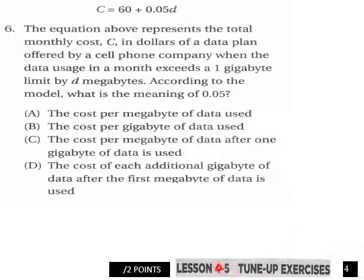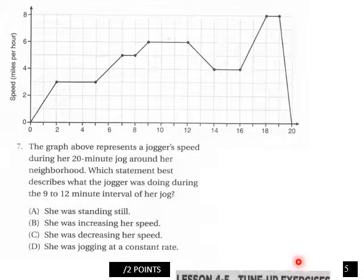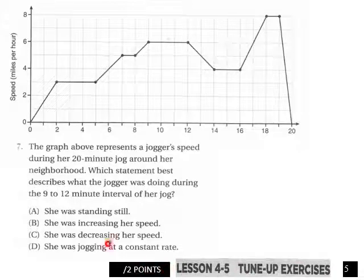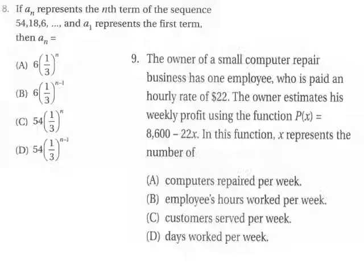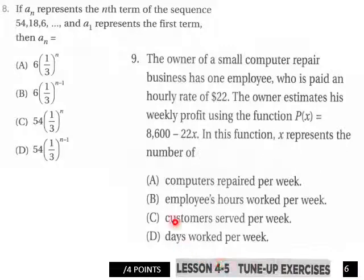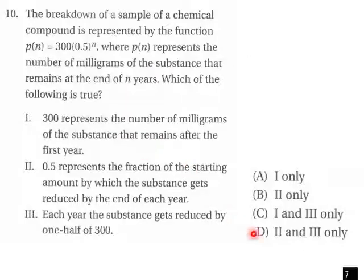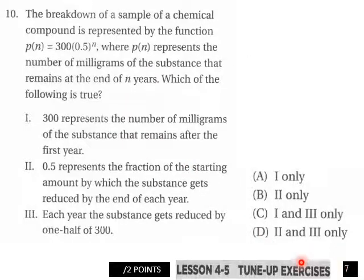Problem number 6 on page 4 of our 4.5 tune-up is another multiple choice — what is the meaning of 0.05 here. Page 5 of the 4.5 tune-up has a graph with a situation and multiple choice. Page 6 on your tune-up exercise has problems 8 and 9, multiple choice.